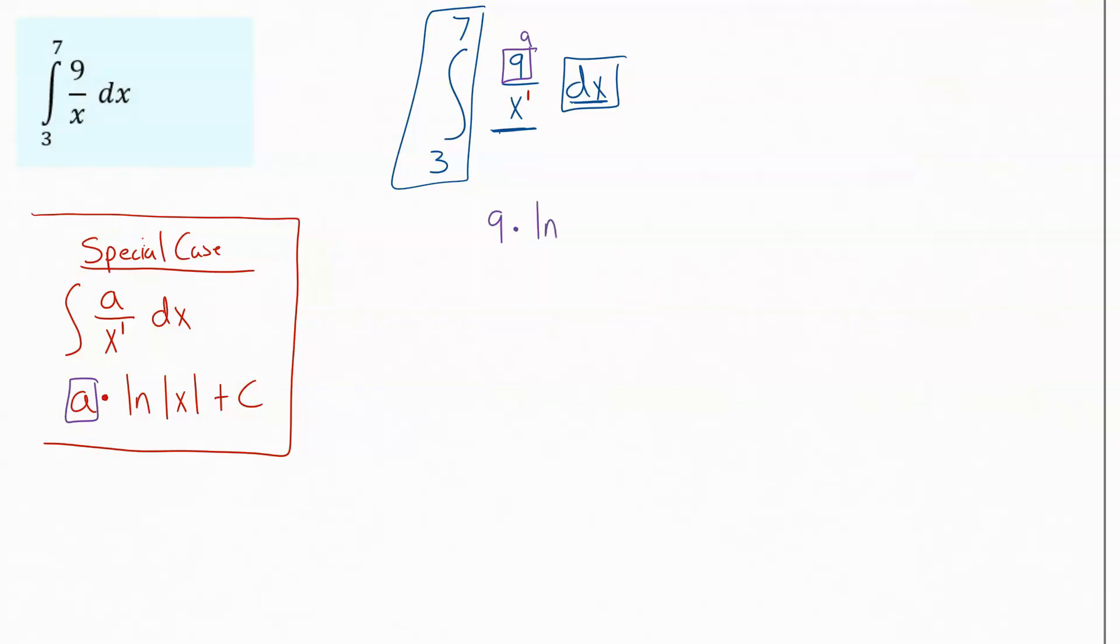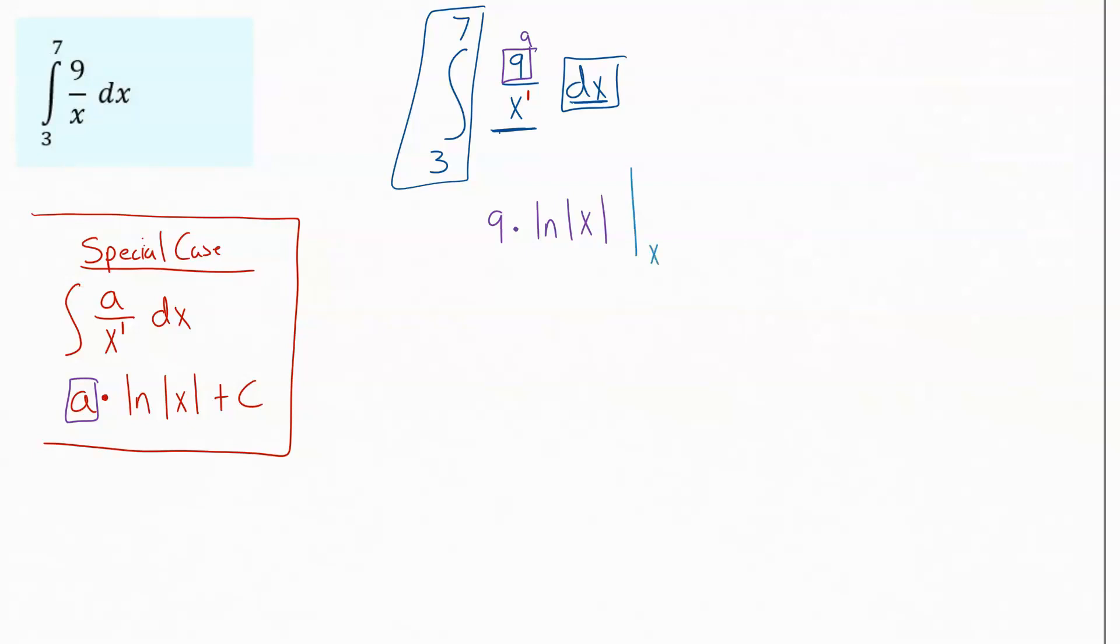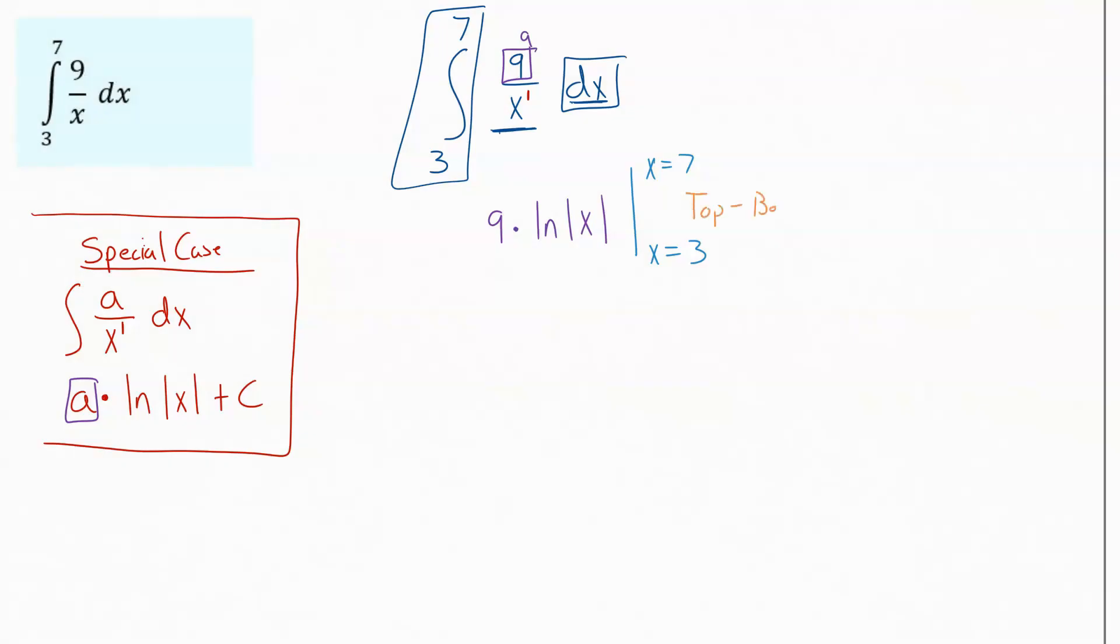When you're dealing with definite integrals, you get this evaluation bar at the end that says evaluated from x equals 3 to x equals 7. We evaluate it by using what I call the top minus bottom method. We're going to take the top value, plug it into that equation, and subtract off the bottom value plugged into the same equation.